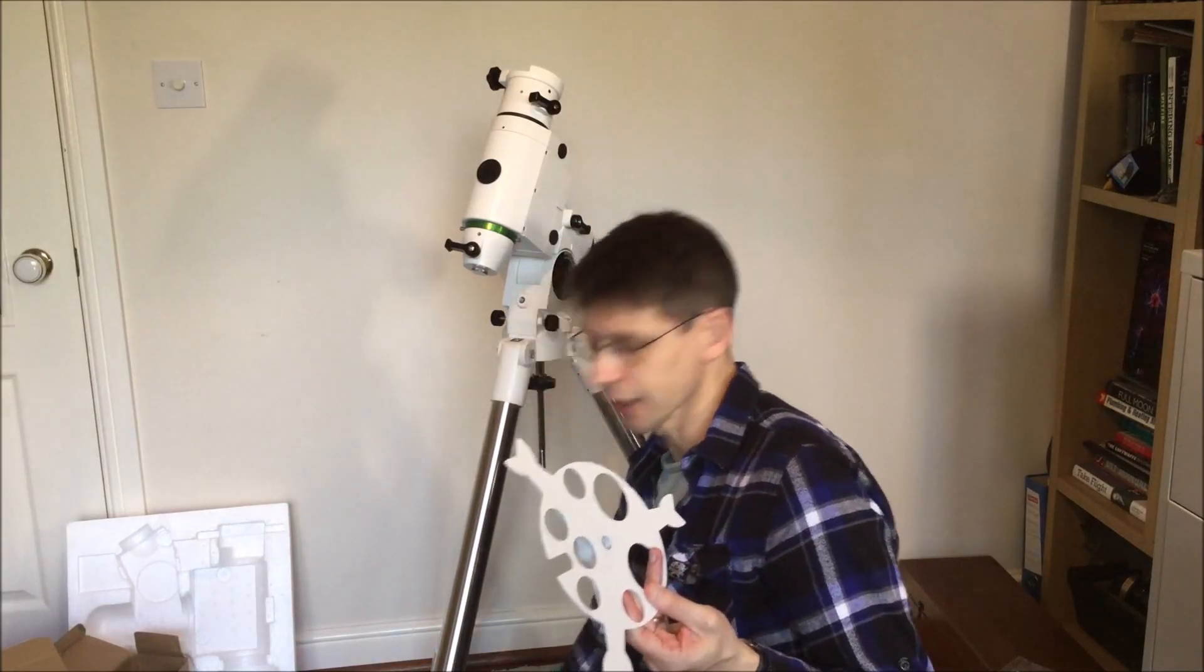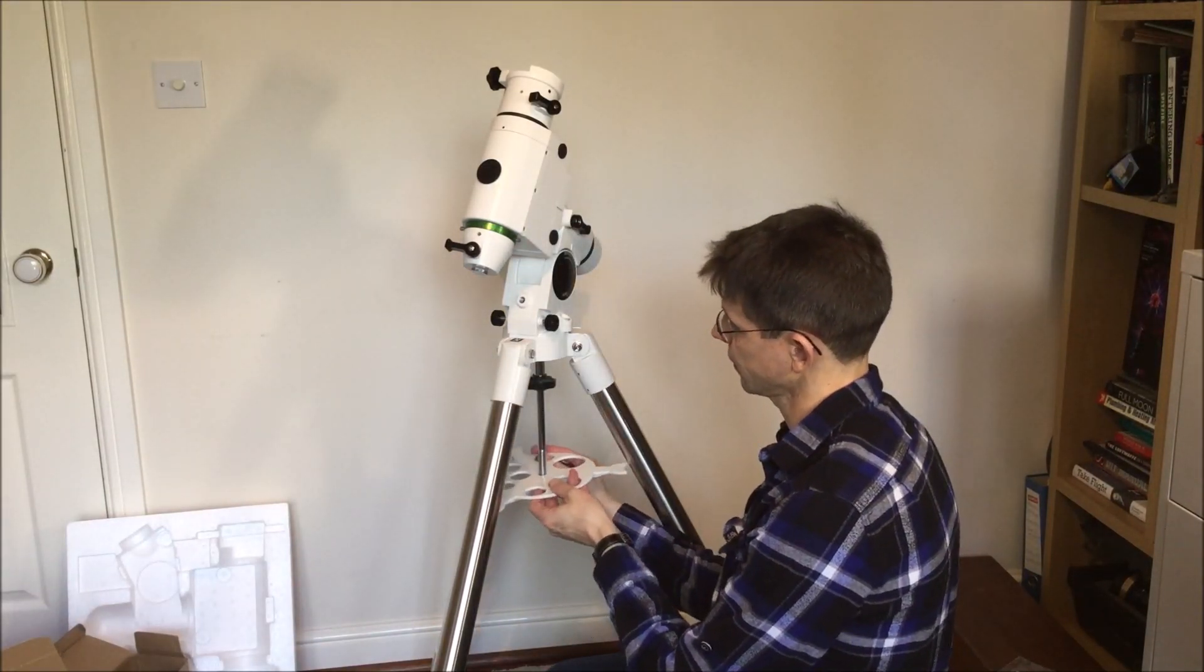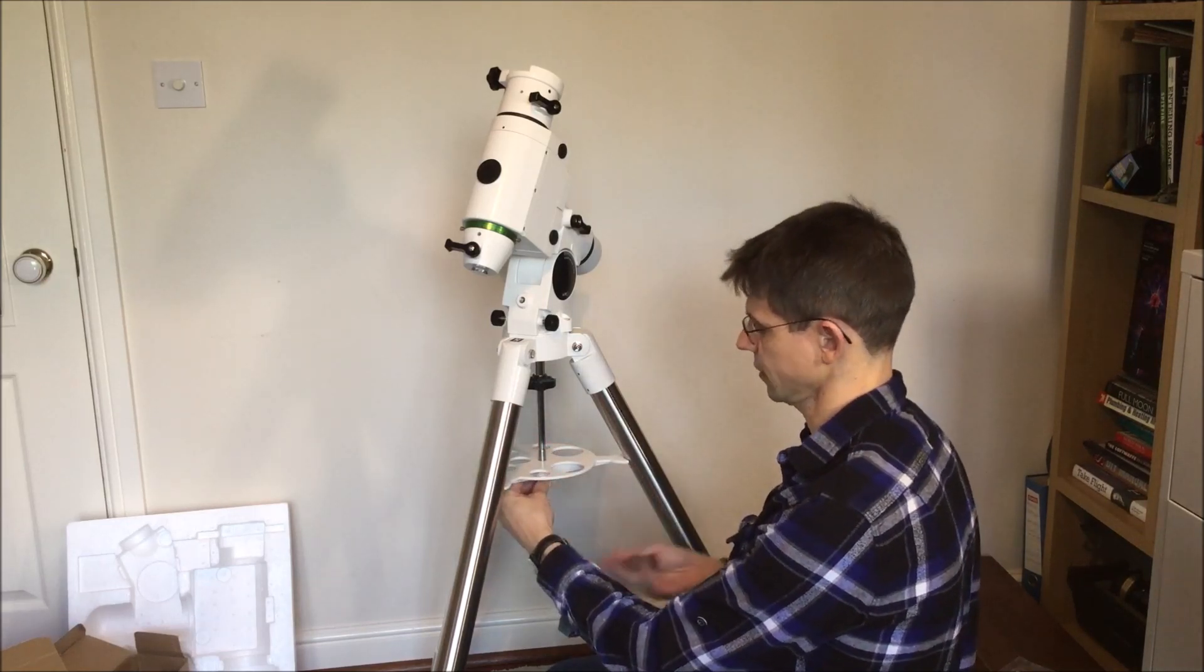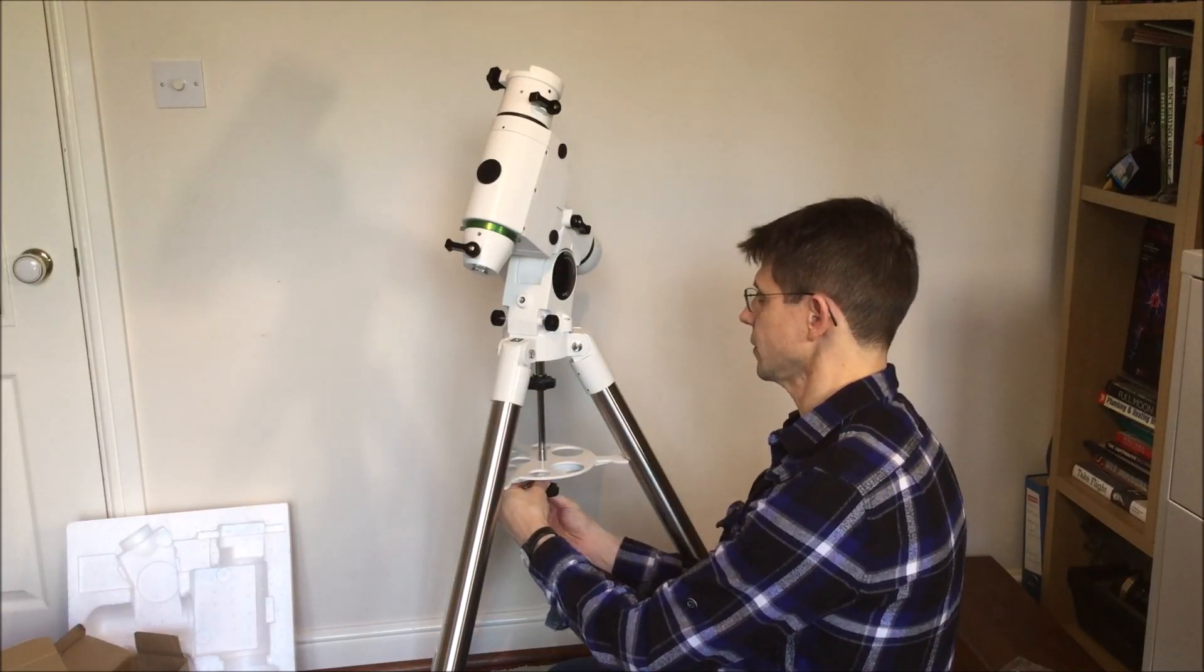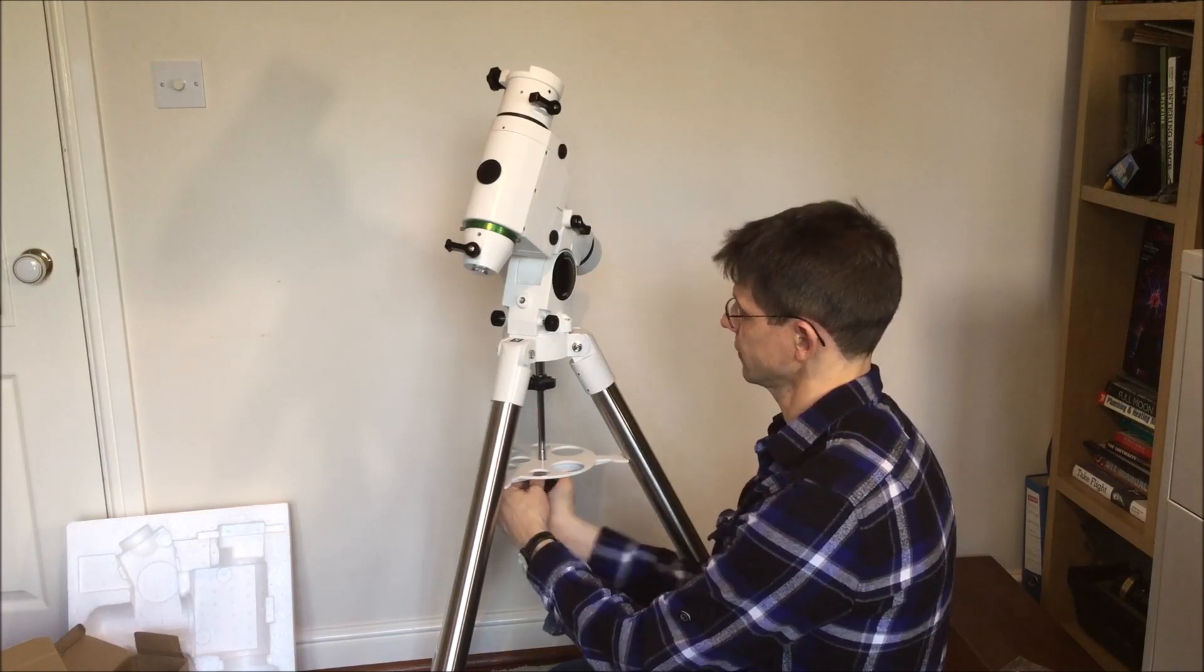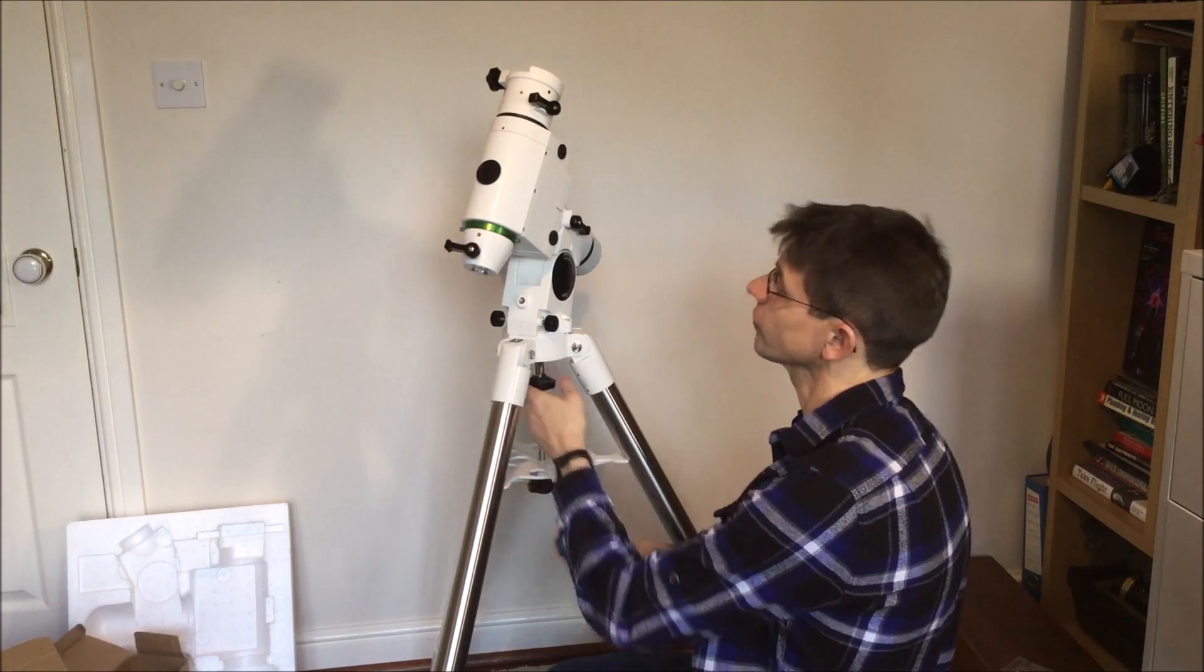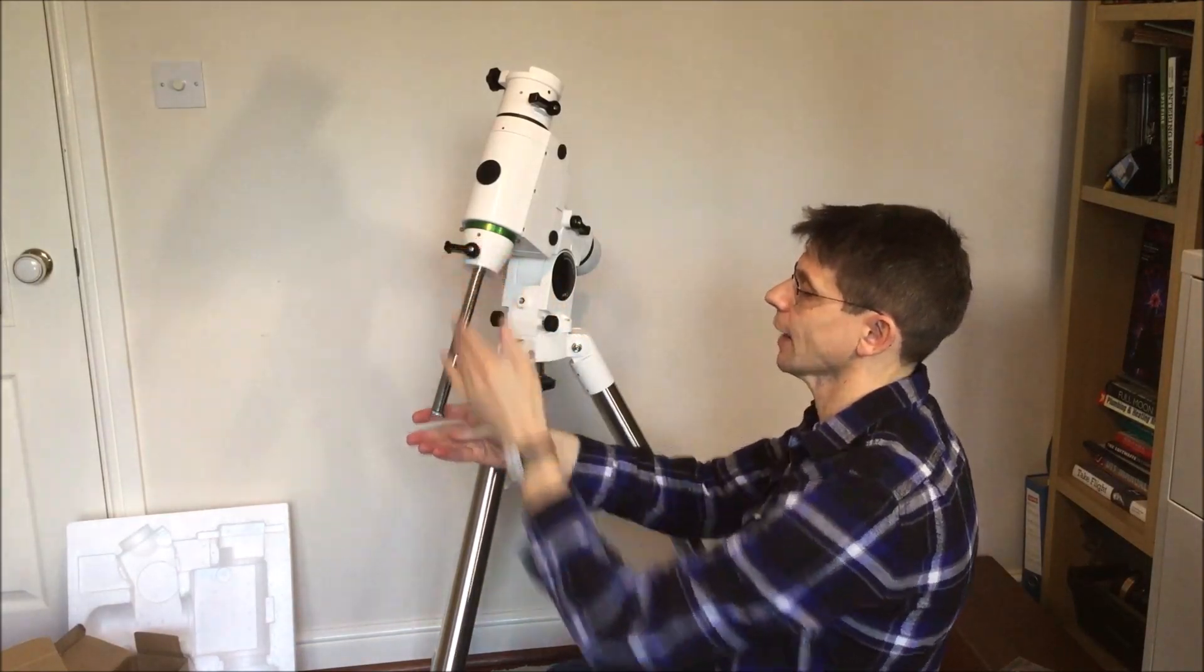Then turning to the spreader bar, attach that. And then there's a washer and a big plastic nut. Attach that finally at the bottom of the assembly. Tighten all together. And then we're ready to attach the counterweights.